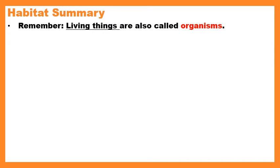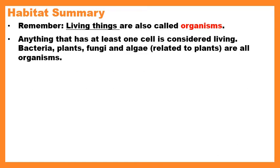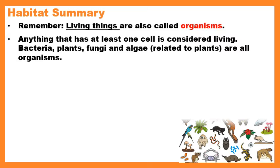We'll start off with the habitat. Remember, living things are also called organisms. Anything that has at least one cell is considered living — so bacteria, which usually have one cell, plants, fungi, and algae, which is an organism related to plants, are all organisms. Sometimes we automatically think of animals when we hear 'organisms,' but don't forget that plants, fungi, and bacteria are organisms too — they're all living.